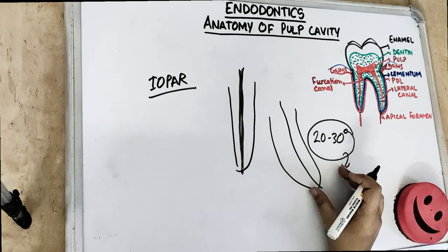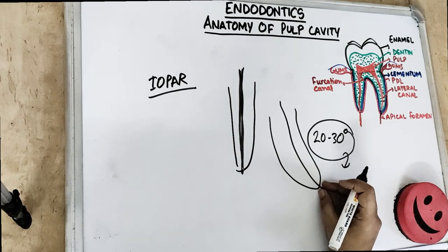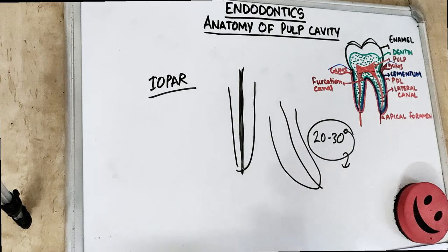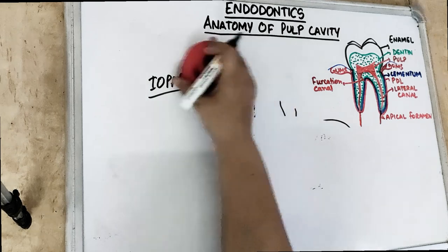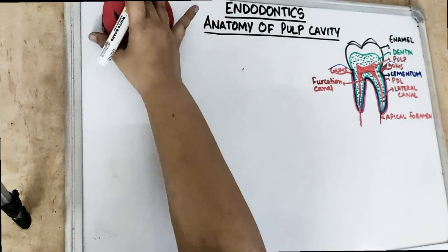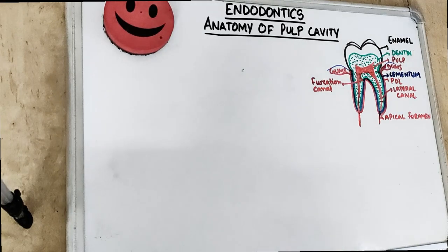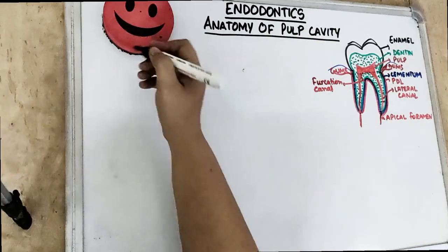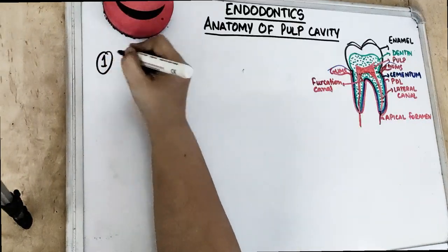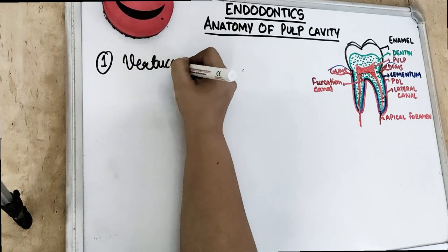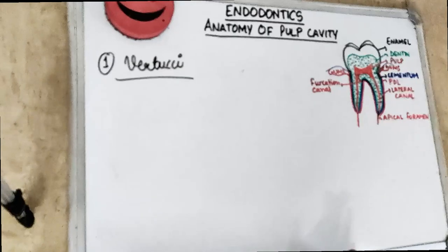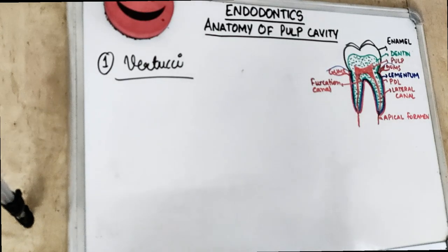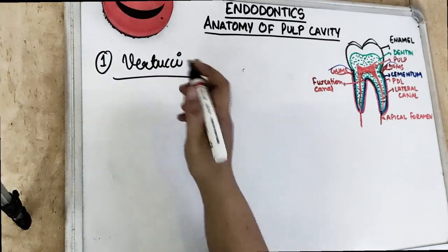Nowadays we have files for curved canals, but these curvatures require flexible instruments. If the canal is narrow, there are chances we may break the file. To check the curvature of the root or canal, we have classifications: the Vertucci classification, the Weine classification, and the Walker classification — but Walker is not important for you. The two key ones are Vertucci and Weine.